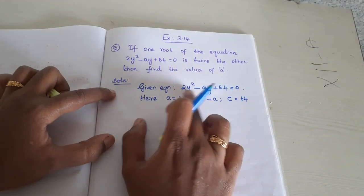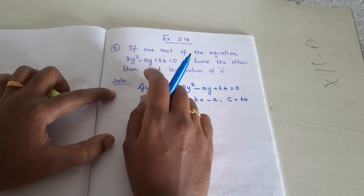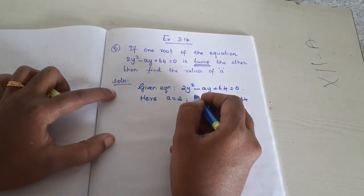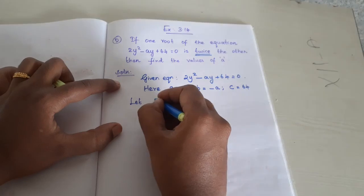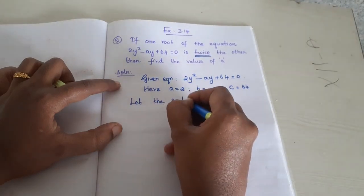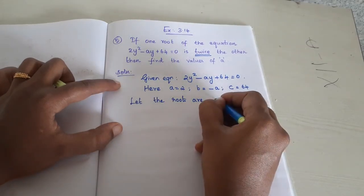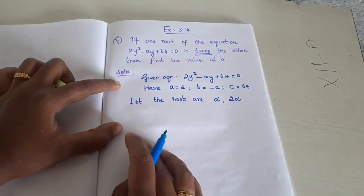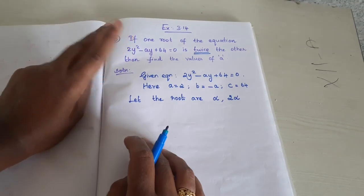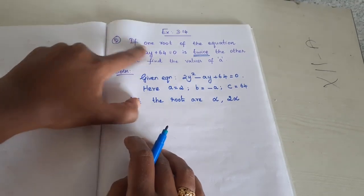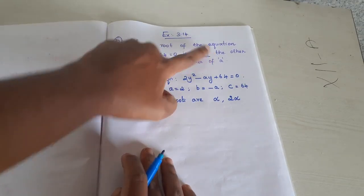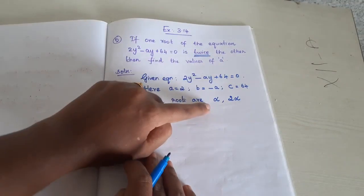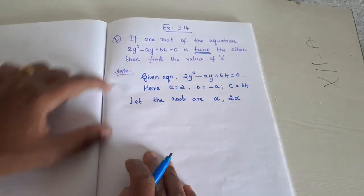A quadratic equation has two roots. The hint given is: if one root of the equation is twice the other — twice means two times. Let the roots be alpha. If one root is alpha, then the other root is two alpha. Normally a quadratic equation has two roots, alpha and beta. Here the question gives us that one root is twice the other, so if the first root is alpha, the second root is two alpha.